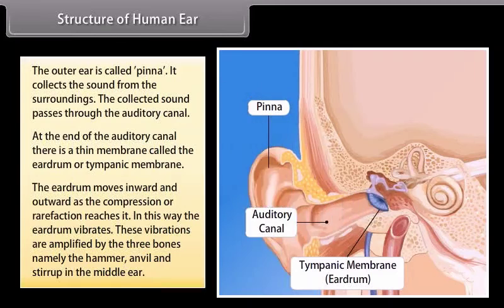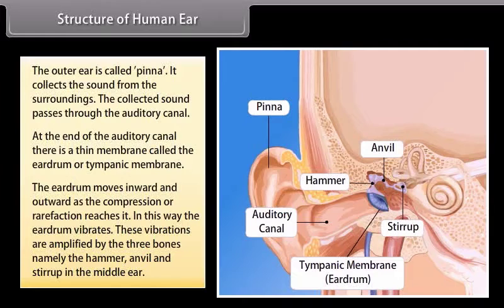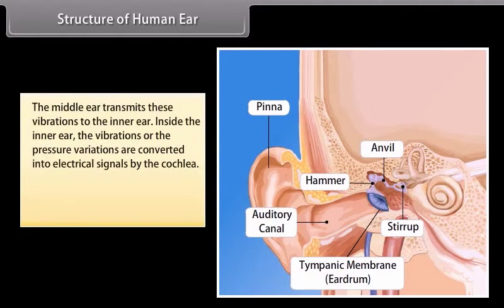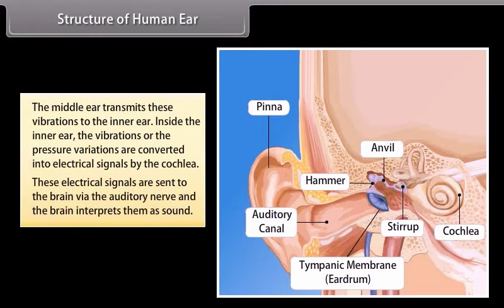These vibrations are amplified by the three bones, namely the hammer, anvil and stirrup in the middle ear. The middle ear transmits these vibrations to the inner ear. Inside the inner ear, the vibrations or the pressure variations are converted into electrical signals by the cochlea. These electrical signals are sent to the brain via the auditory nerve and the brain interprets them as sound.